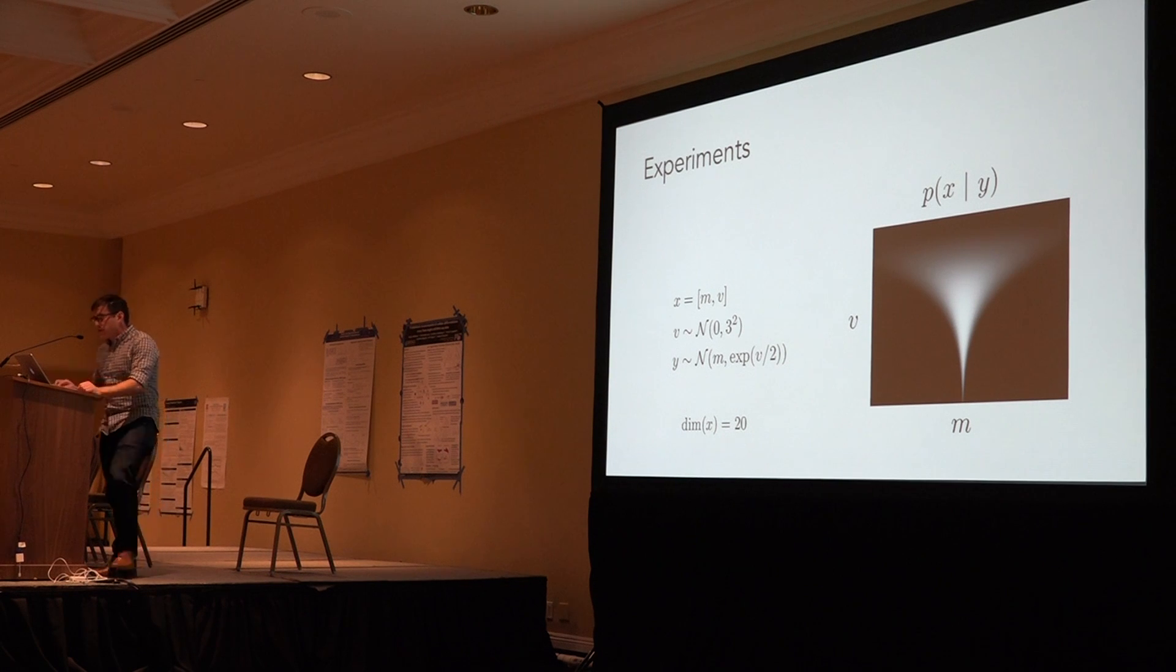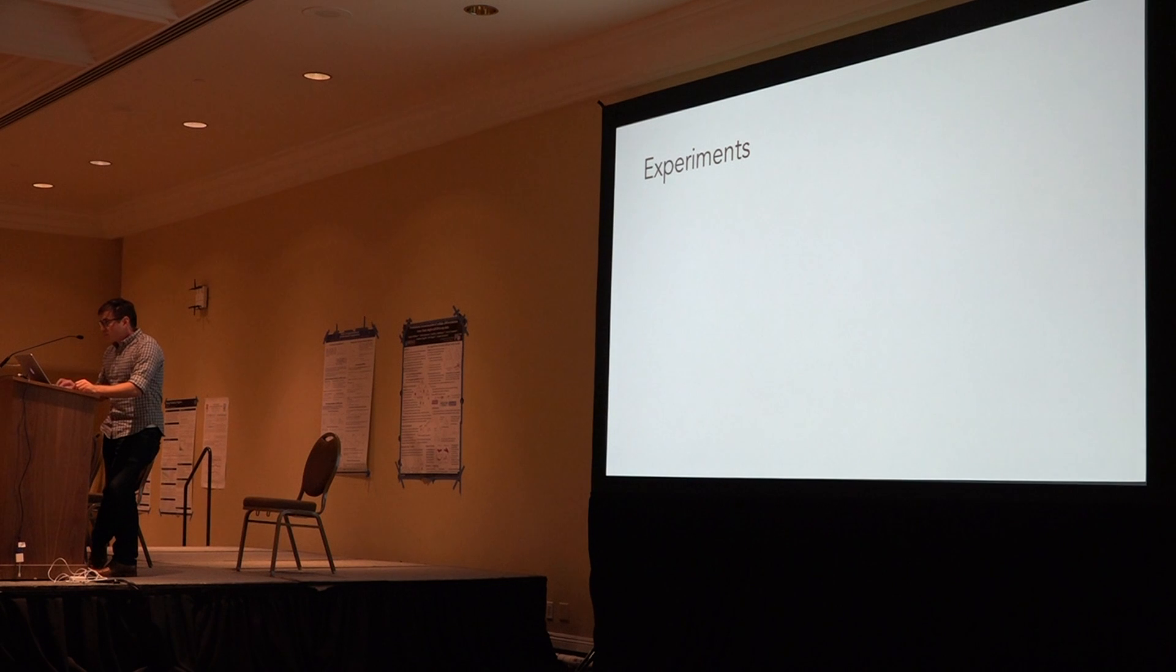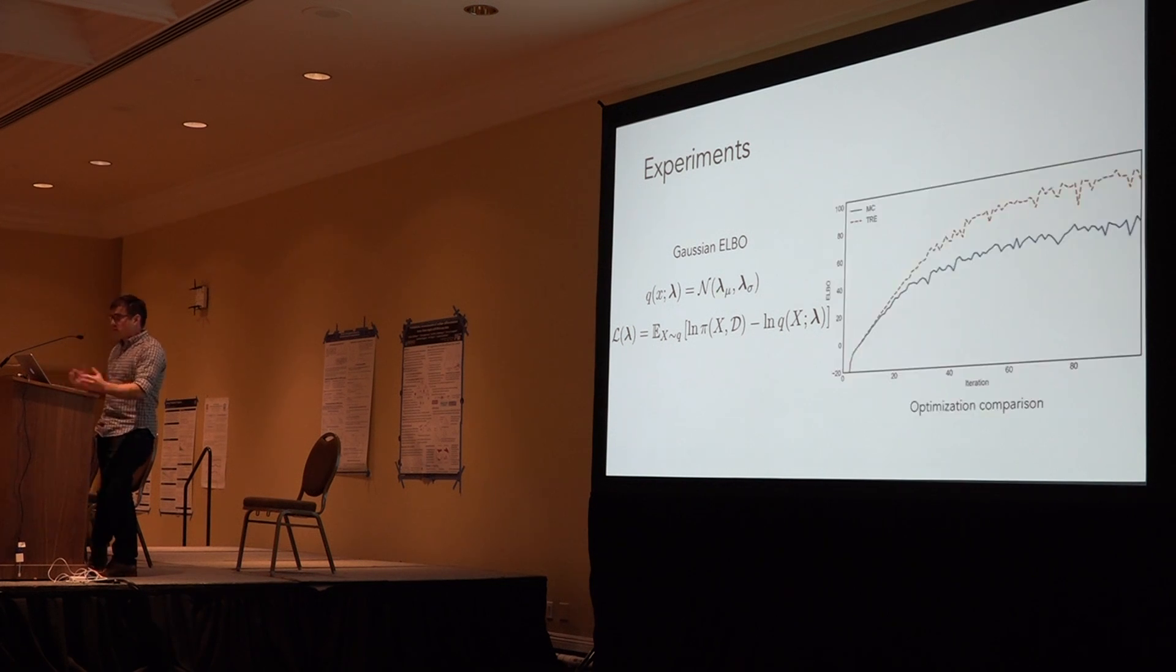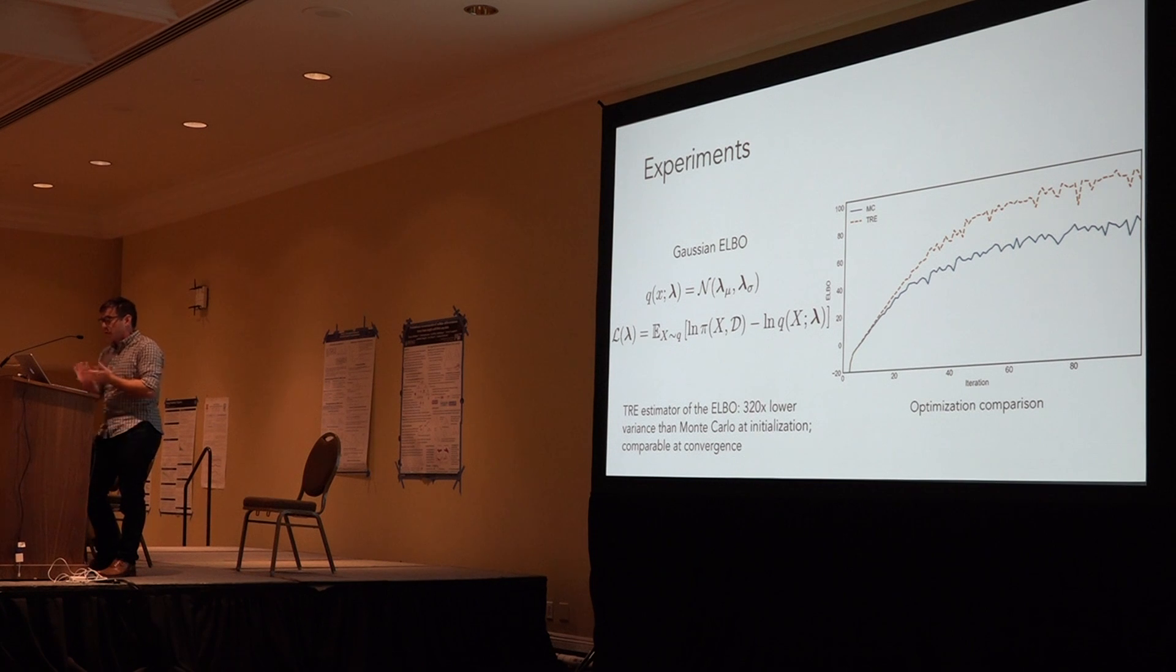We experimented with this estimator on a synthetic variational inference example, in particular this funnel distribution in 20 dimensions, fitting a posterior approximation to this distribution. The first approximation we use is a Gaussian distribution with a mean and a diagonal covariance parameters. We compare the optimization using the reparameterization trick on the naive Monte Carlo, the original Monte Carlo estimator, and the Taylor residual estimator. We observe optimization traces that look sort of like this. With the reparameterization trick applied with the Taylor residual estimator, it converges much quicker. We also measured the Taylor residual estimator in terms of variance at different points in the optimization procedure. At initialization, it's about 320 times lower variance than the Monte Carlo approximation, and near convergence they're really comparable in variance.